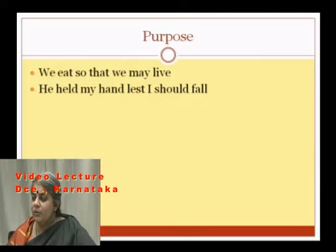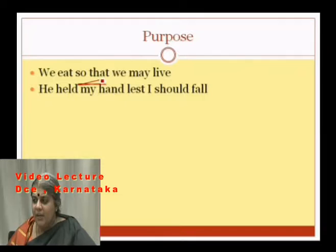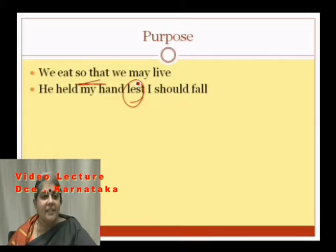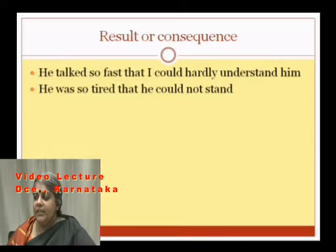Subordinating conjunctions can also express cause or reason — words: as, since, because. 'As it is a public holiday, all the shops were shut.' 'He may enter as he is my friend' — 'as he is my friend' is the subordinate clause. 'Since it is dark, take the torch with you' — the subordinate clause gives reason. They can also express purpose: 'We eat so that we may live.'